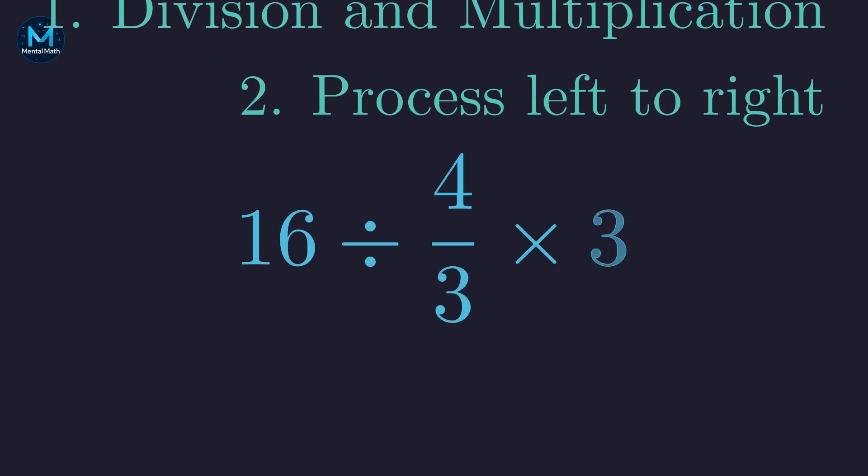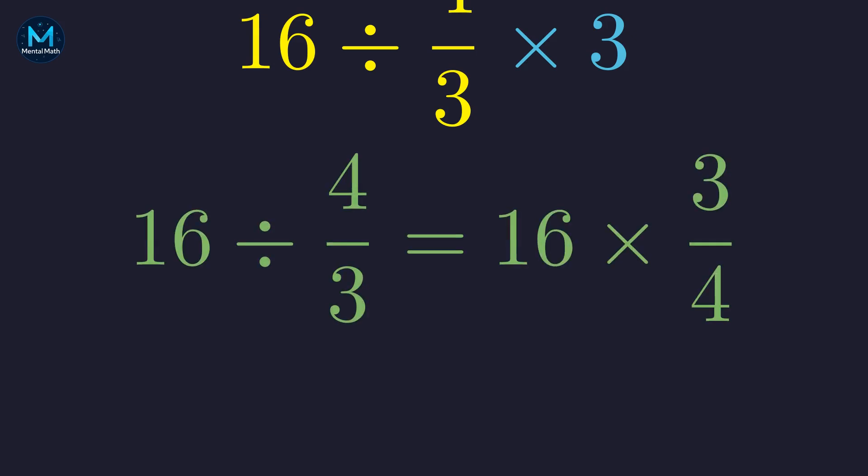Here's our expression. 16 divided by four-thirds times three. Working left to right, we start with 16 divided by four-thirds. And remember, dividing by a fraction is the same as multiplying by its reciprocal. So we flip four-thirds to get three-fourths. Division becomes multiplication when we flip the fraction.